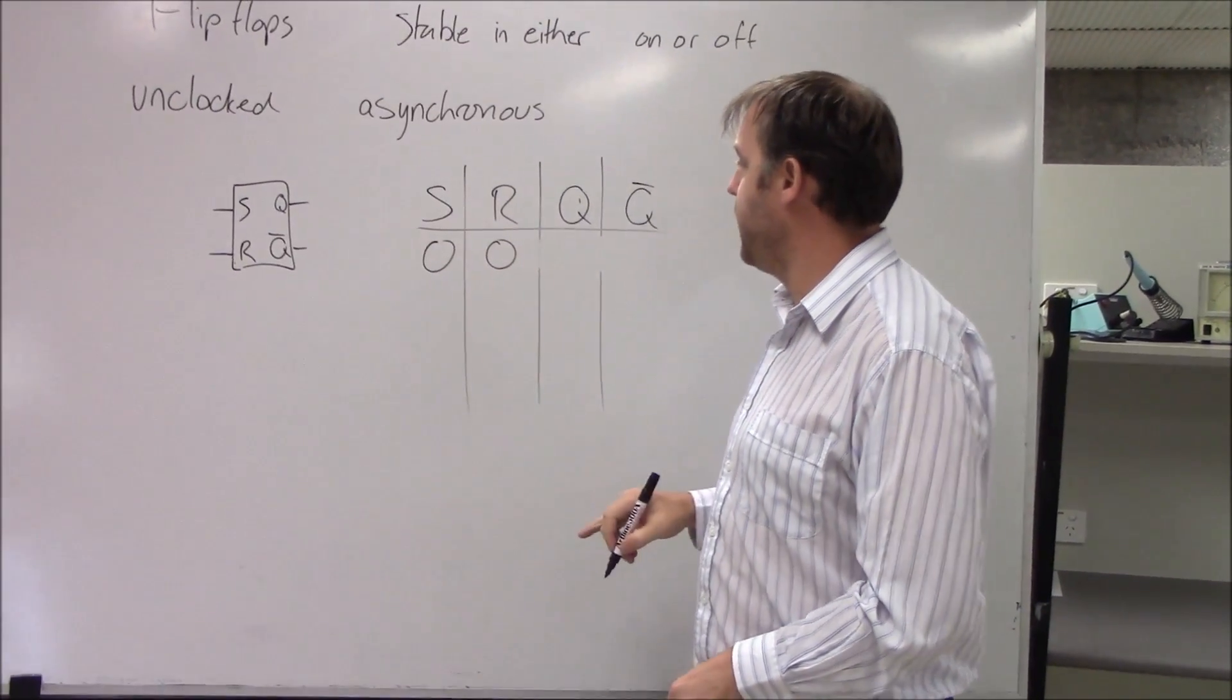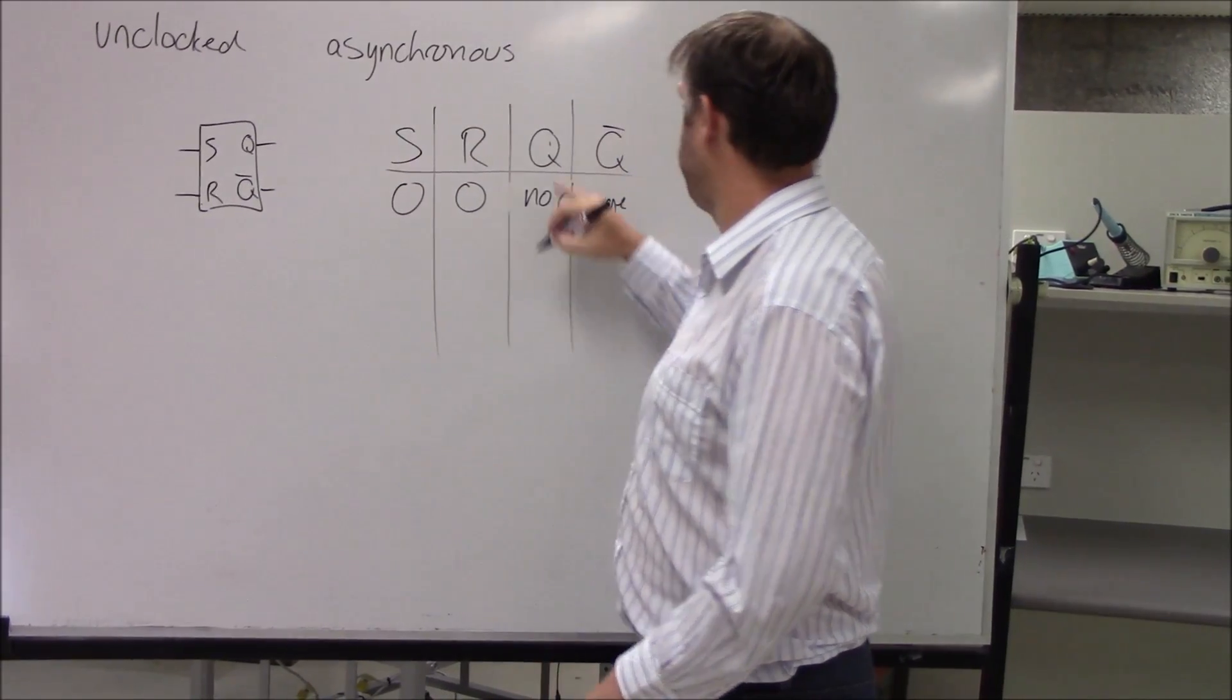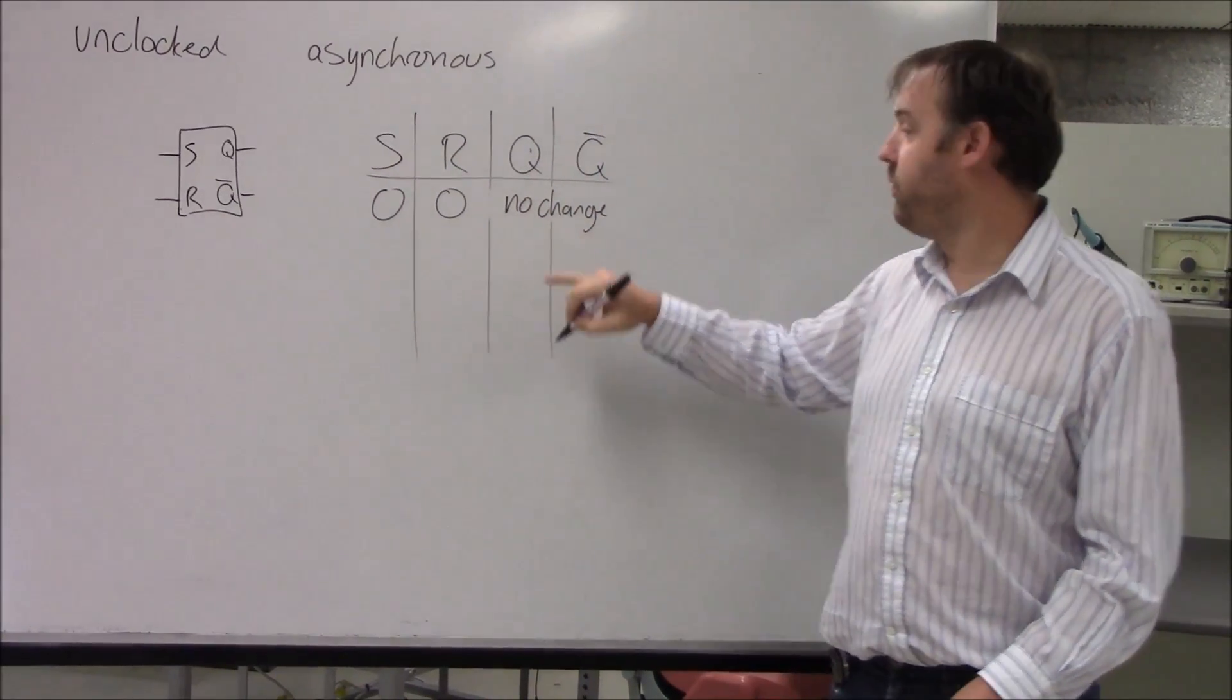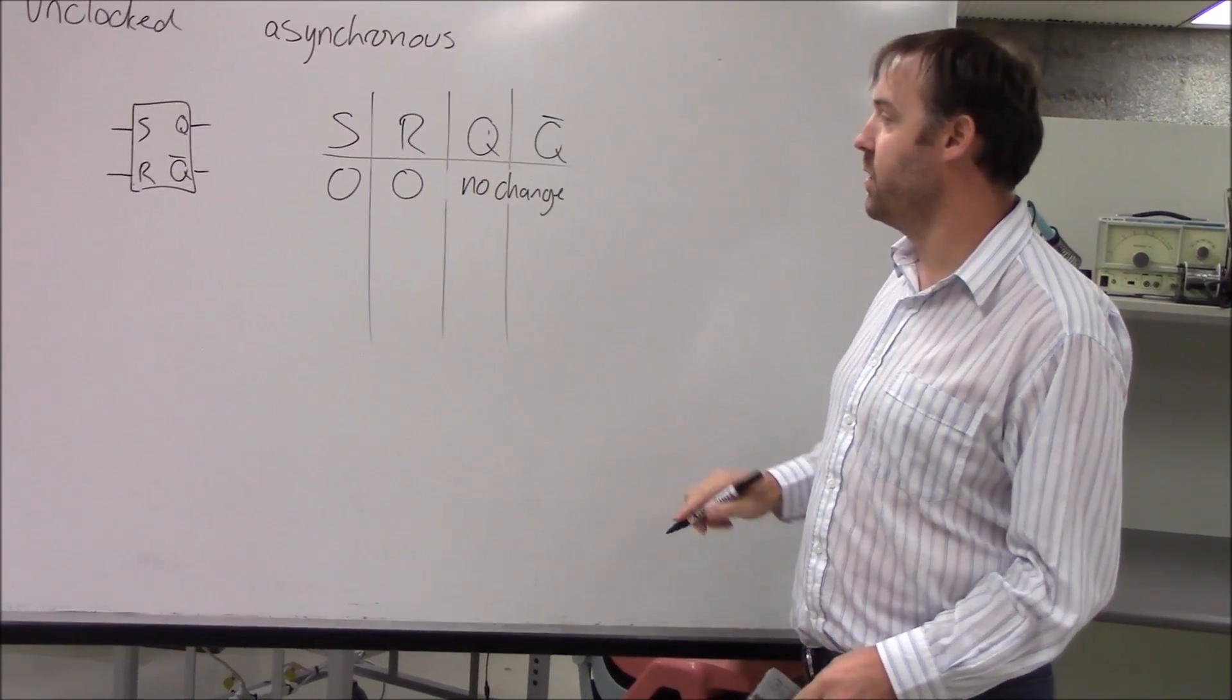If both set and reset are zero, there is no change. If Q is high it will remain high, if Q is low it will remain low, and Q-bar will be the complement of that, the opposite of that.